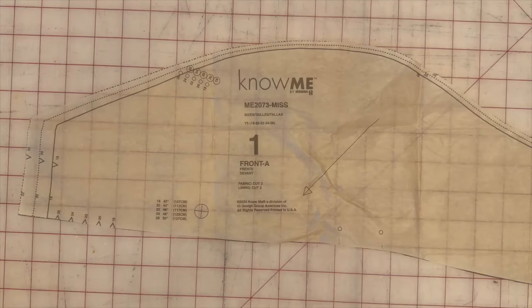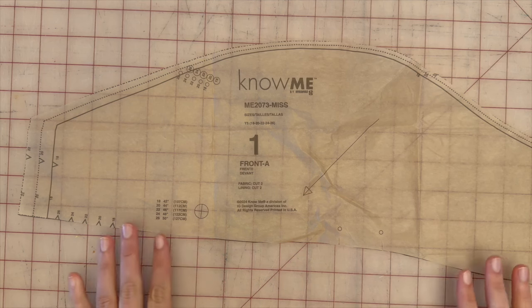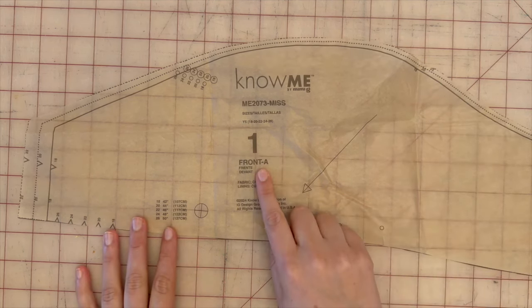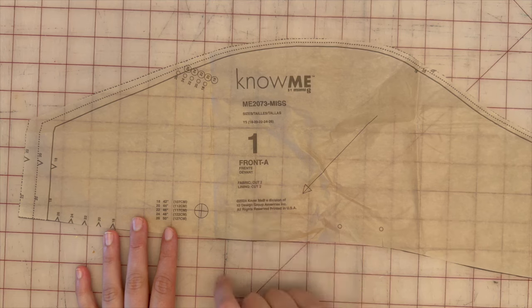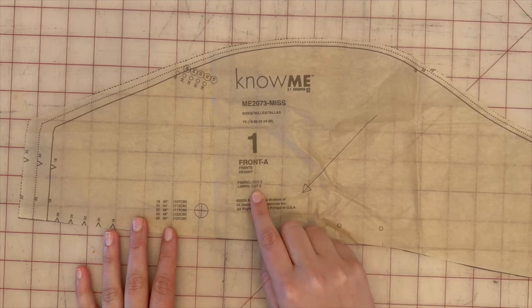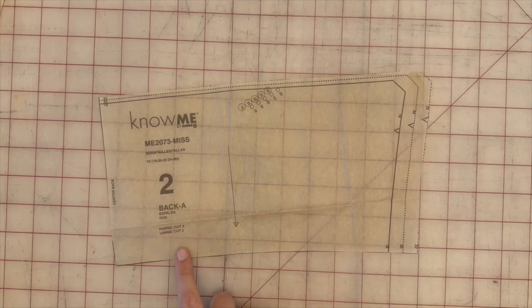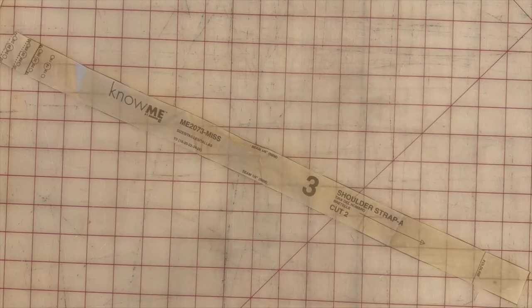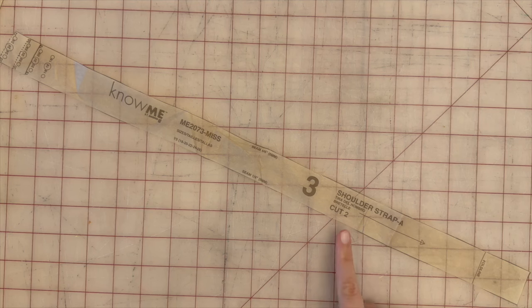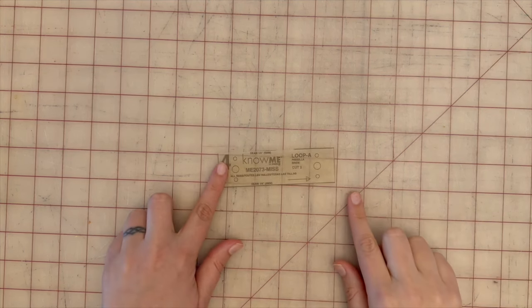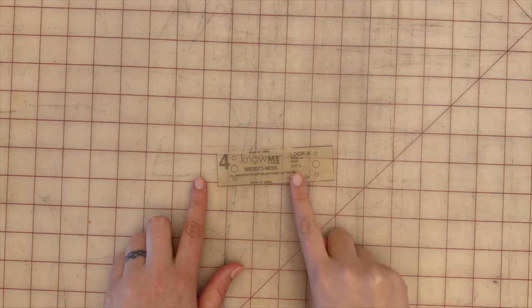View A has four pattern pieces which include pattern piece one, the front. You're going to cut two for your main fabric and two for your lining. Pattern piece number two are your back pieces. Again, cut two in your main fabric, two in your lining. Pattern piece three are your shoulder straps, cut two. And pattern piece four, your loops, you're going to cut two.